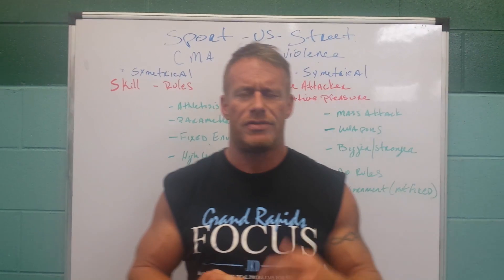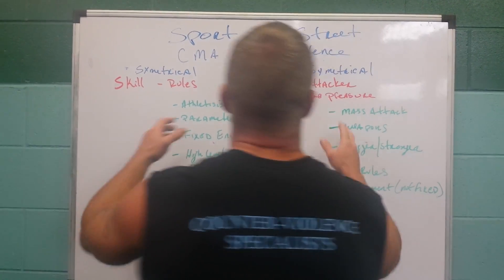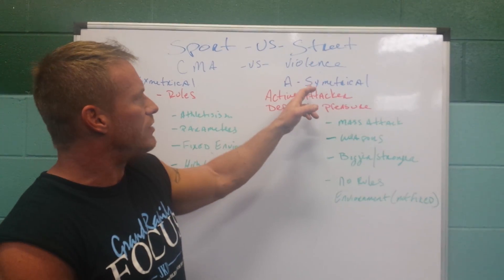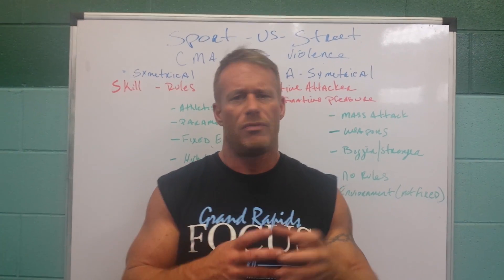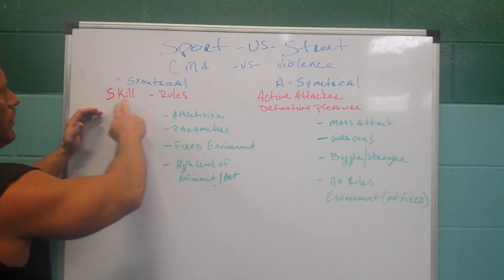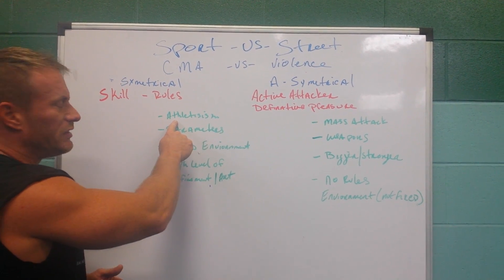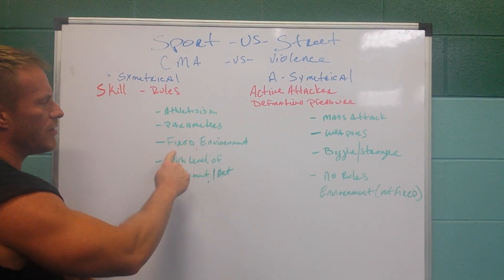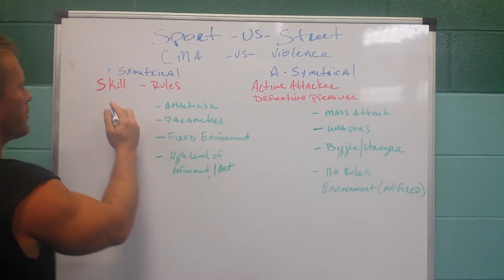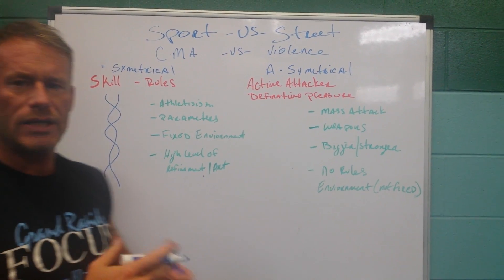We're going to use the assistance of science and look through the scope of science to help us better understand that. First and foremost, sport or competition is symmetrical and street is asymmetrical — one is even, one is not. Based on that parameter alone, skill and rules set the symmetrical or even environment. The characteristics are: they're athletic, they have parameters, there's a fixed environment, and there's a high level of refinement. I want to use skill and rules as our two main intertwining characteristics.